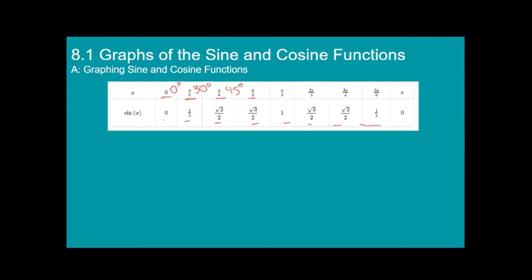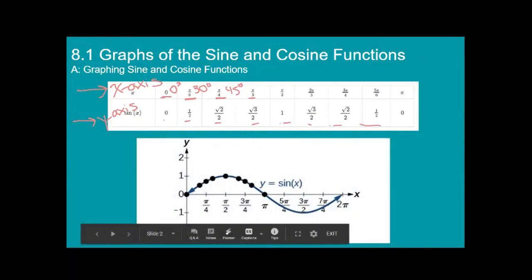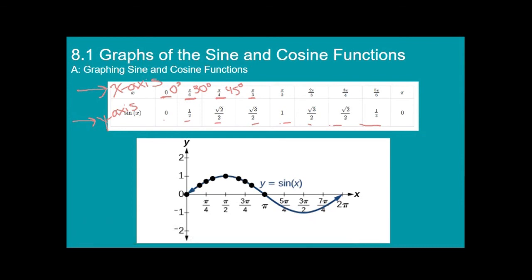If we use these values and graph the angles as the x-axis — because that's the independent variable — and then graph the sine values on the y-axis, we can end up with a graph of sine of x. And it should look like this. You guys should have gotten something like this on your previous assignment. It's a wave. We call this a sine wave.